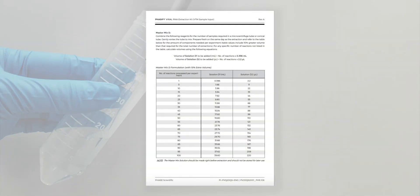Then, prepare Master Mix D by adding solution D1 and solution D2 into a microcentrifuge or conical tube. Refer to the Master Mix D formulation table found inside the kit to determine the exact volume of each reagent you should add depending on how many samples you intend to process.